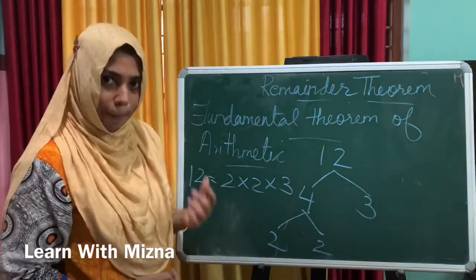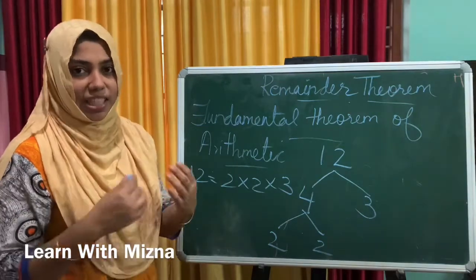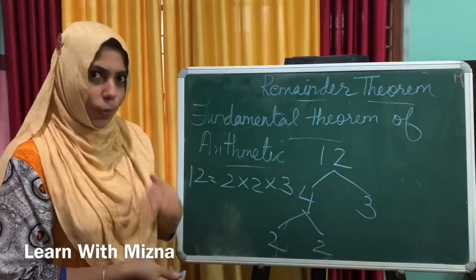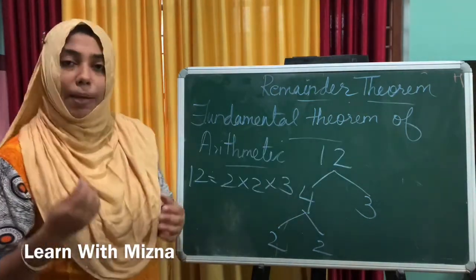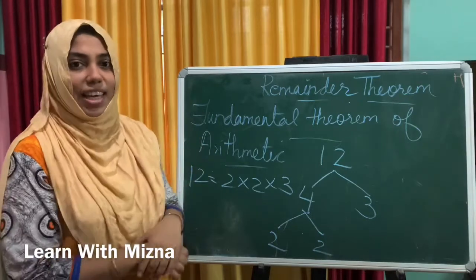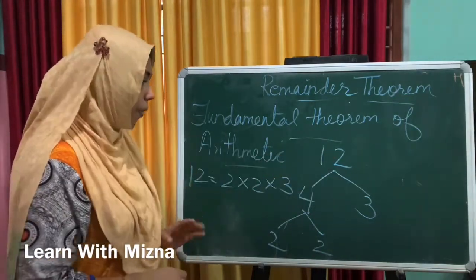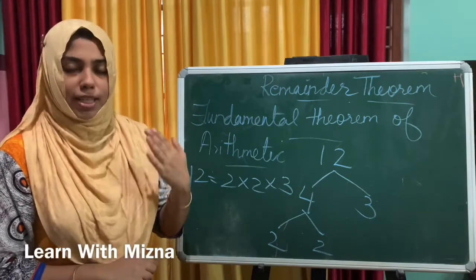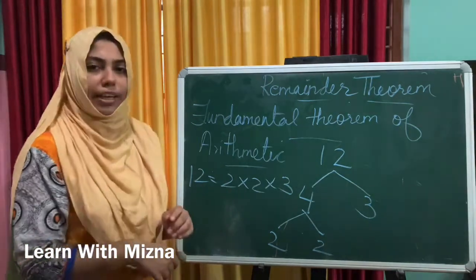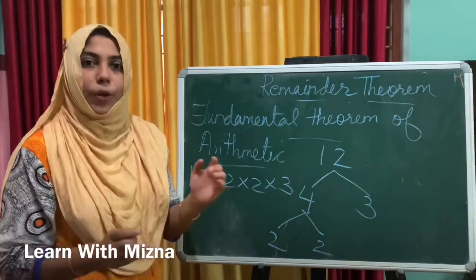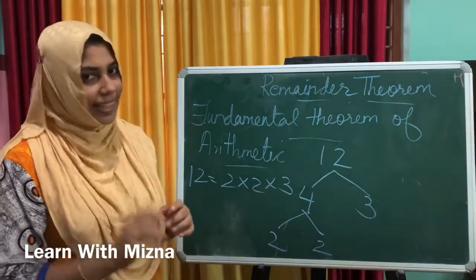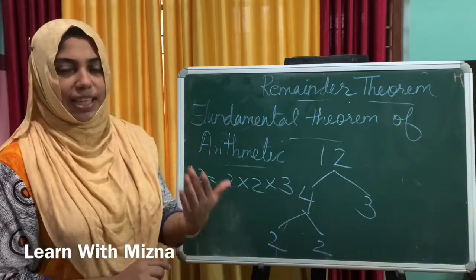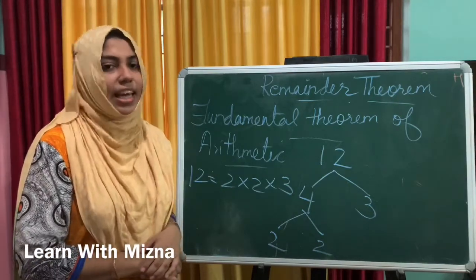One composite number expressed as the product of prime numbers — this is the Fundamental Theorem of Arithmetic. For example, one composite number is 12, and we say the product of prime numbers. The prime number 2 is one factor. We call it composite numbers.